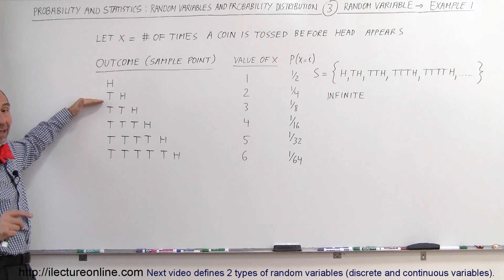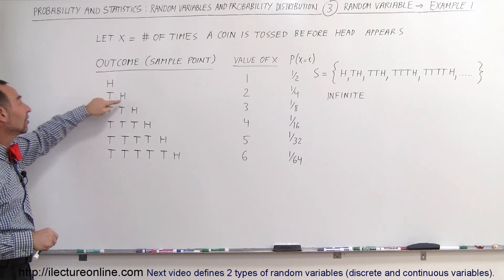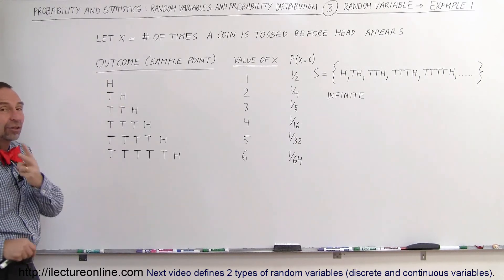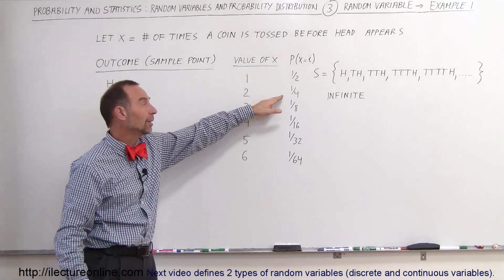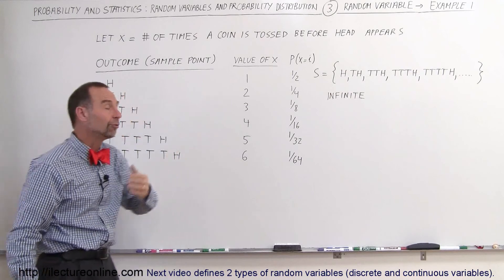We could also have the probability that the first time we do it, we get tails, and the second time we get a head. In this case, we have to toss the coin twice, so therefore, X will now be two, and the probability of that happening would be a quarter.